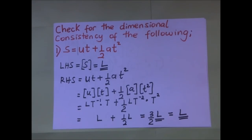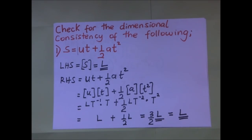In our previous video we showed how derived quantities — area, volume, velocity, acceleration, and force — relate to the fundamental quantities of mass, length, and time. We concluded that we use dimensions to check for consistency of equations and to derive equations. In this video we concern ourselves with using dimensional analysis to check for consistency of equations. This is Kisembo Academy, thanks for tuning in.